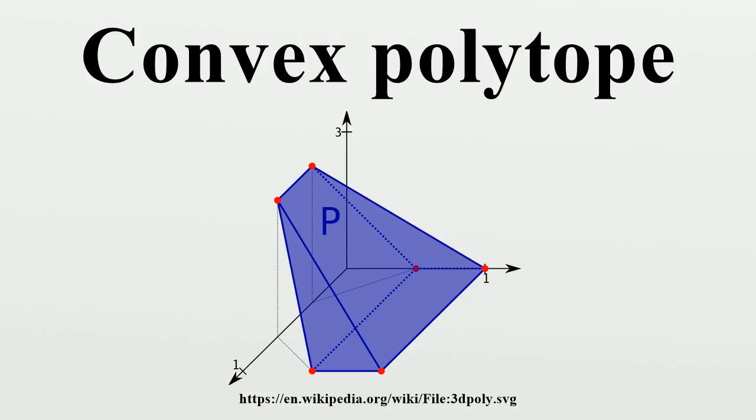Definitions: A convex polytope may be defined in a number of ways, depending on what is more suitable for the problem at hand. Grunbaum's definition is in terms of a convex set of points in space. Other important definitions are: